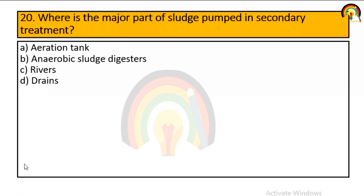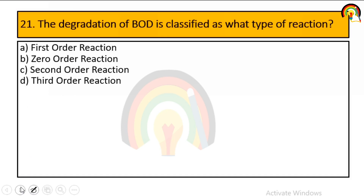Where is the major part of sludge pumped in secondary treatment? Options: aeration tank, anaerobic sludge digester, or river/drain? It is the anaerobic sludge digester. The degradation of biological oxygen demand is classified as what type of reaction? First order, zero order, second order, or third order reaction? It is a first order reaction.